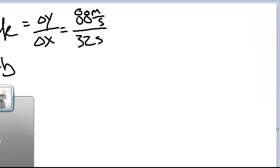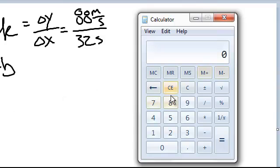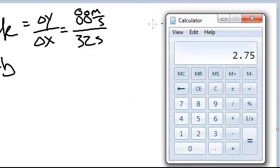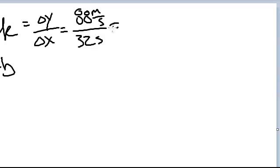And if I go down here in the calculator, punch that in. Type in 88 m per second, 32 seconds. I get 2.75. So my answer is 2.75. Equal sign here, 2.75.